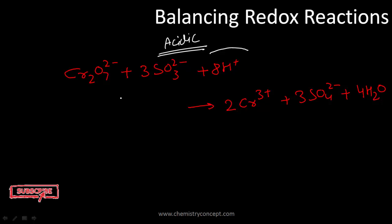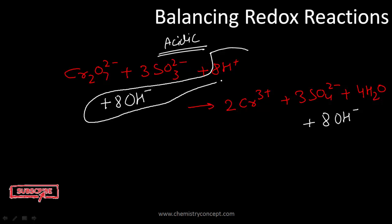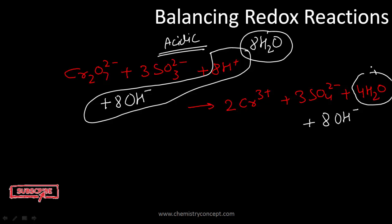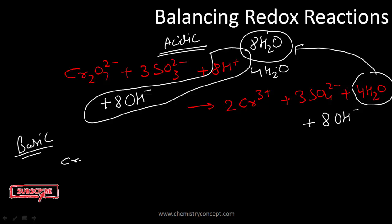Since there are 8 protons on the reactant side, add 8 OH⁻ ions to the reactant side, and also add 8 OH⁻ ions to the product side. The 8 H⁺ and 8 OH⁻ on the reactant side combine to give 8 water molecules. On the product side there are already 4 water molecules, so those 4 cancel out from the 8, leaving 4 water molecules moving to the reactant side.